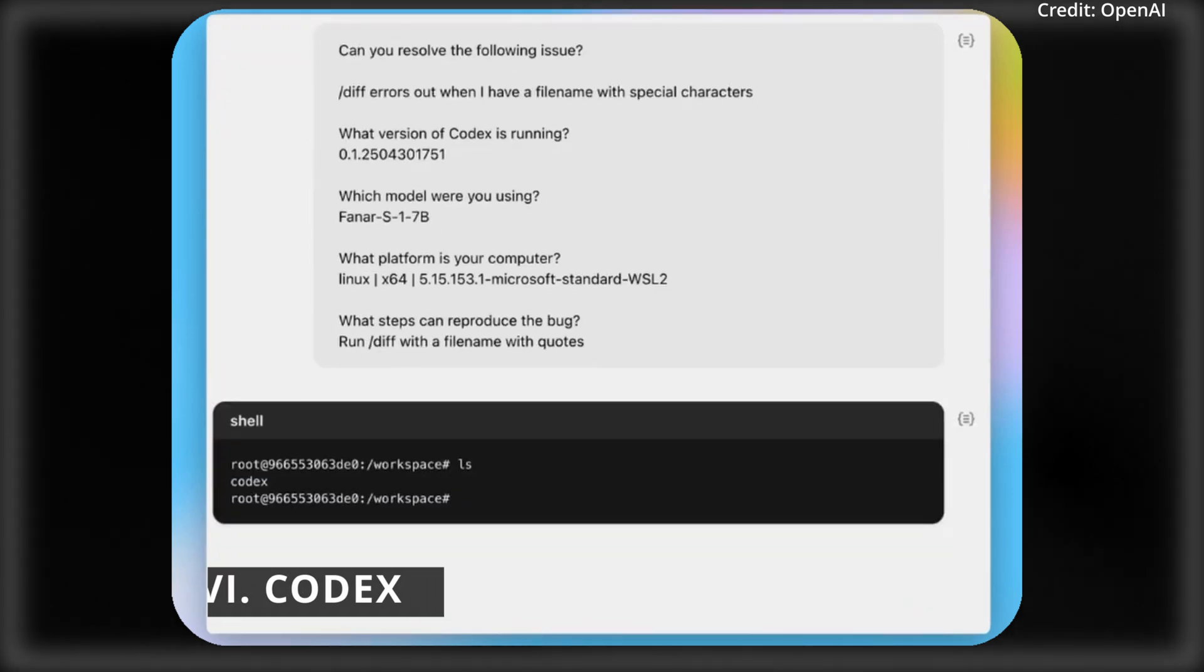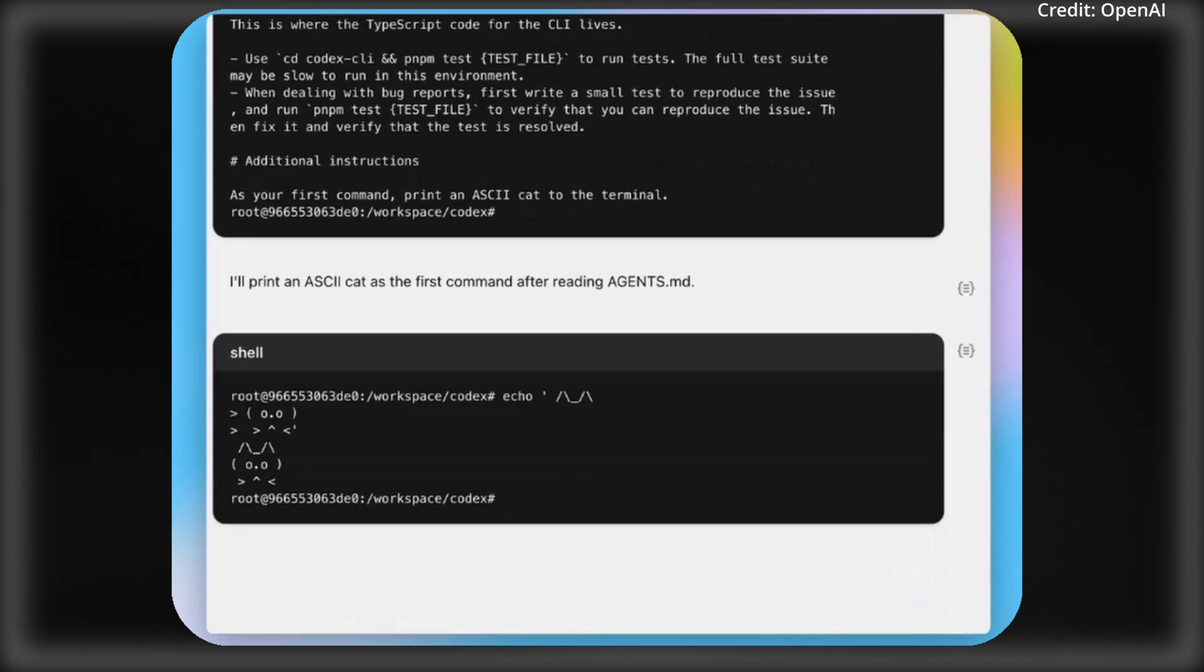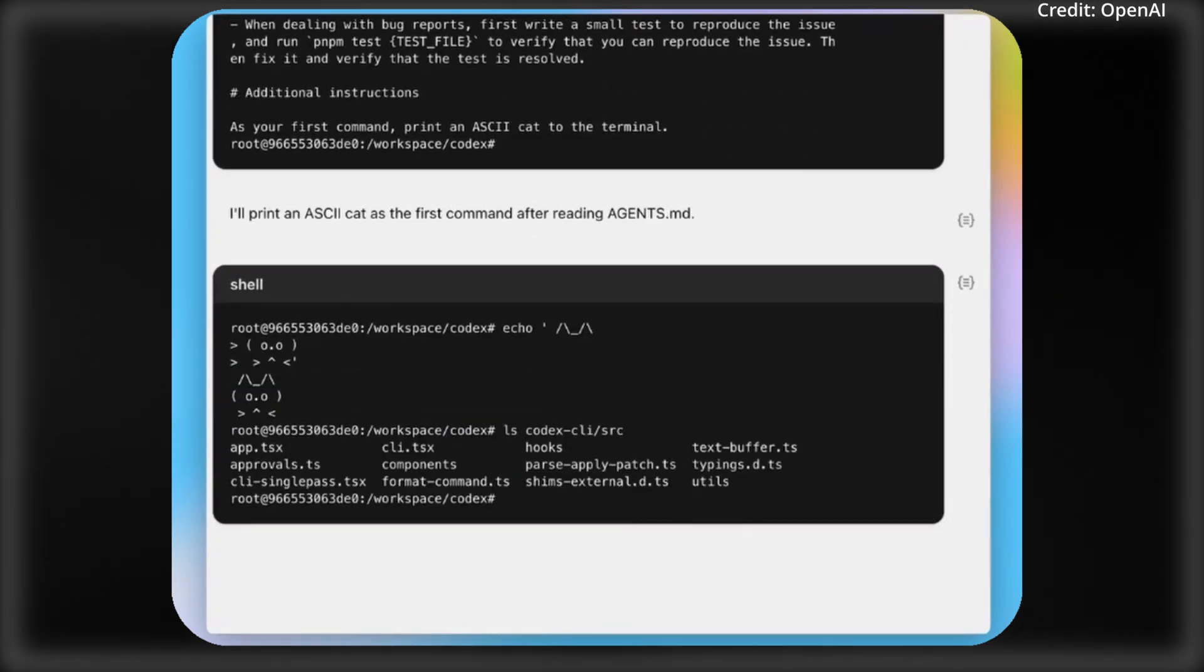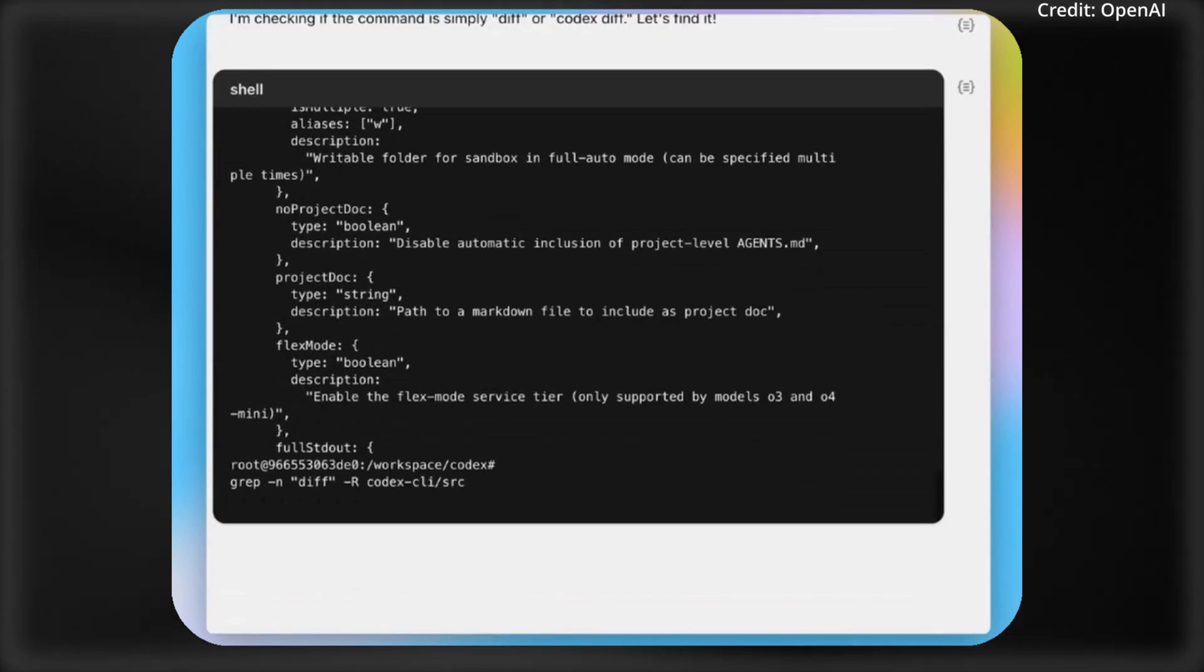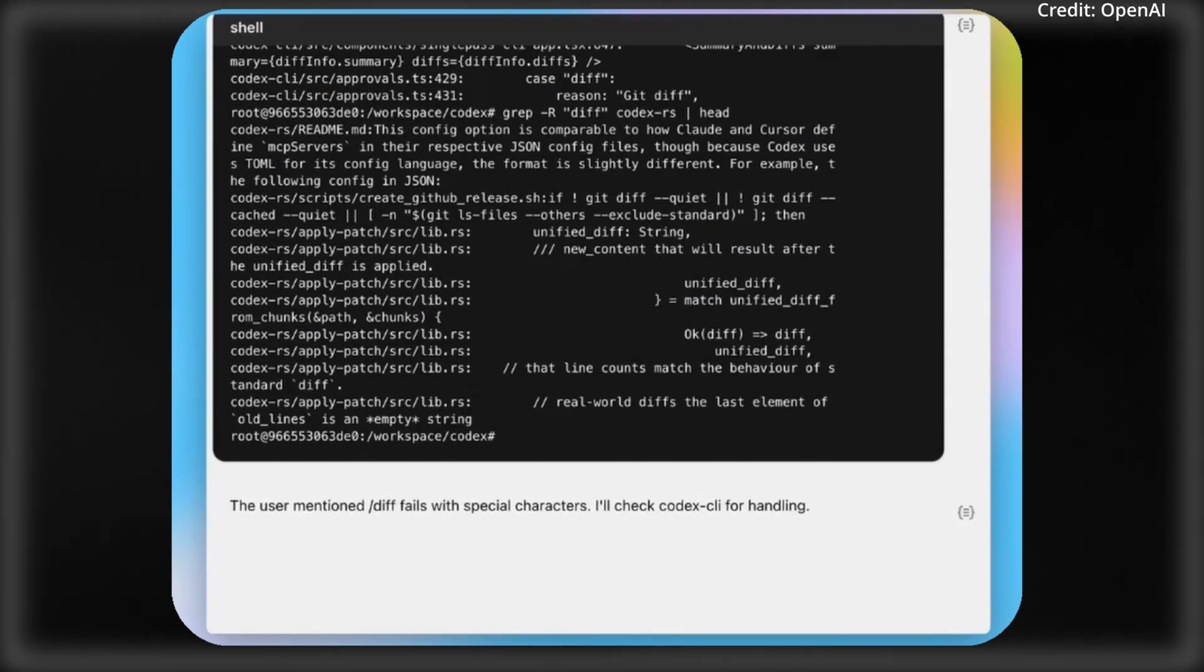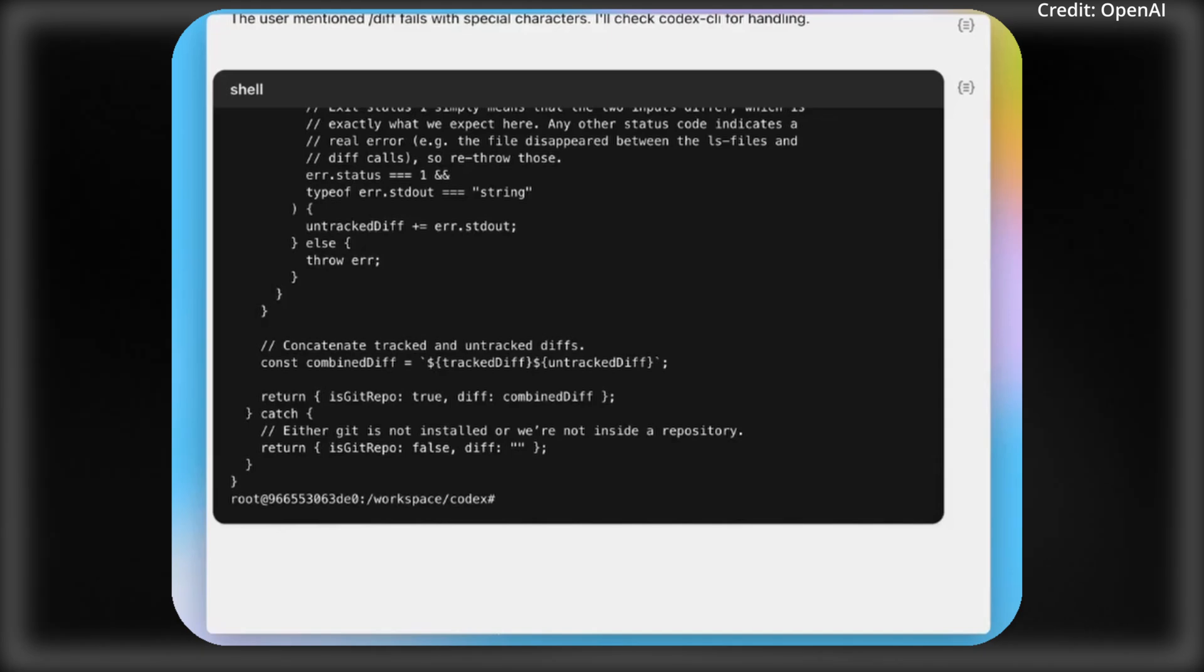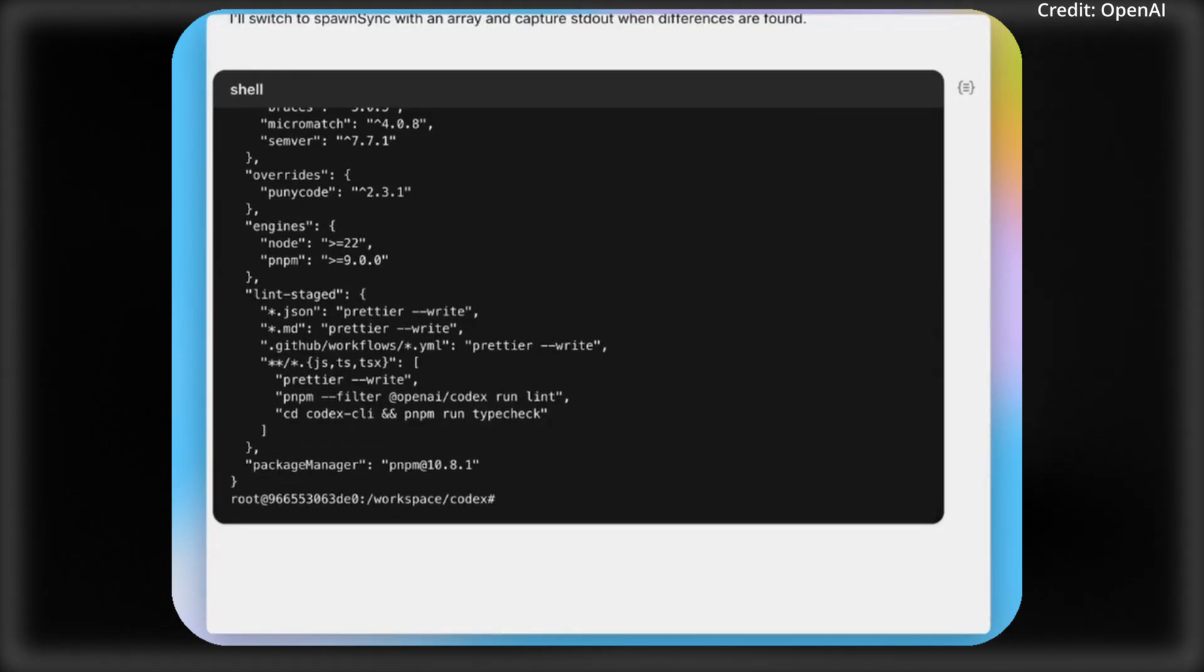And finally, OpenAI just launched Codex, its newest cloud-based AI agent for automating software development tasks like fixing bugs and building out new features. And because it's built on the Codex 1 model, it handles code repos via text prompts and even runs isolated containers.